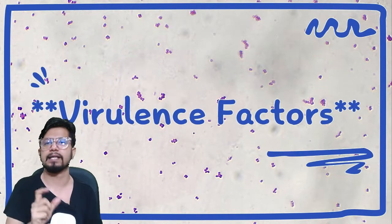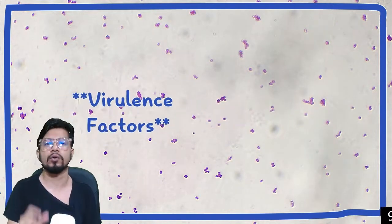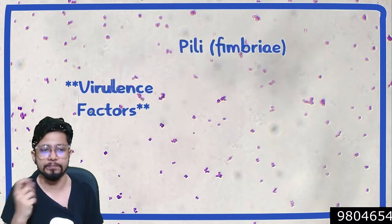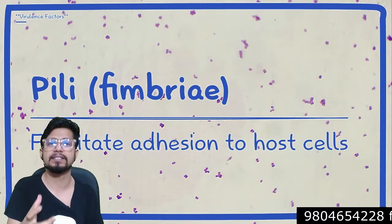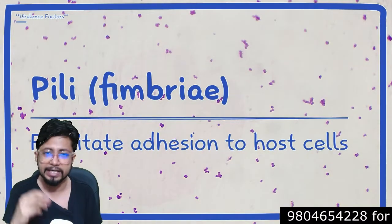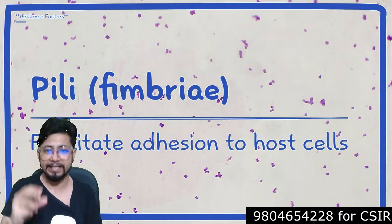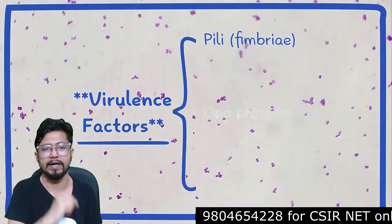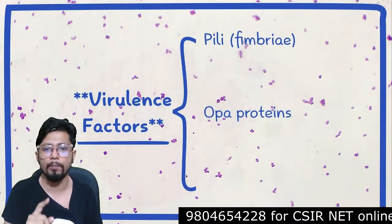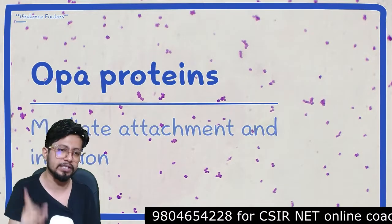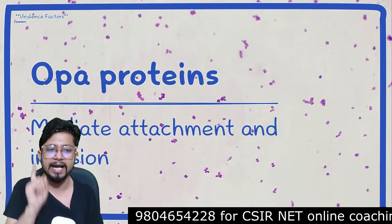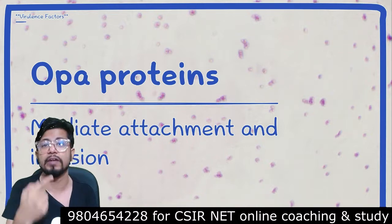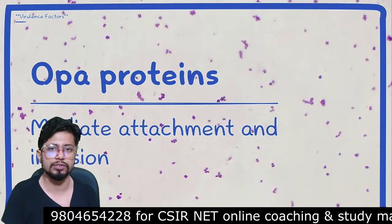What are the virulence factors that Neisseria gonorrhoeae bacteria share? It has pili or fimbriae as a virulence factor that facilitates the adhesion and attachment of gonorrhea bacteria to the surface of the host cell. The next virulence factor is OPA proteins, which mediate the attachment of Neisseria gonorrhoeae to the host surface and also invasion into host tissue.